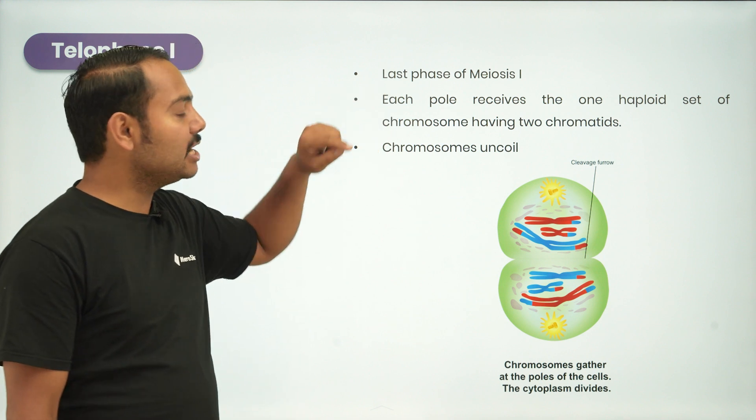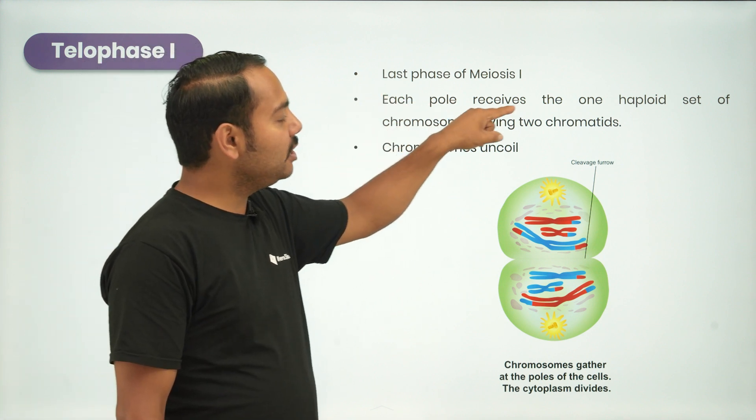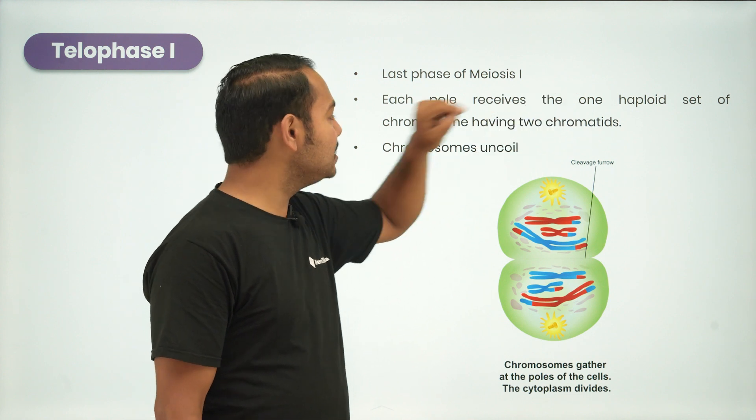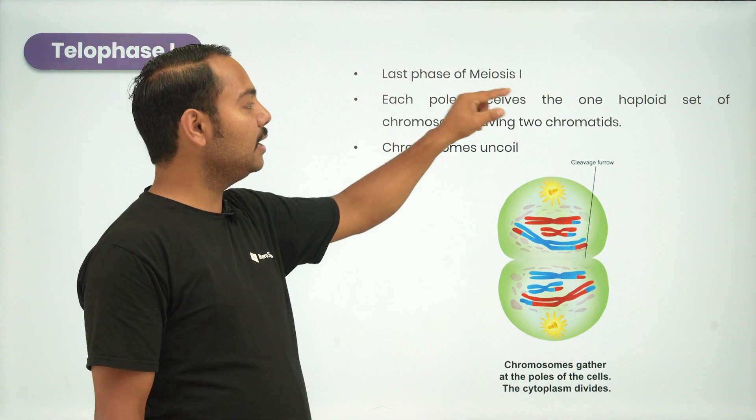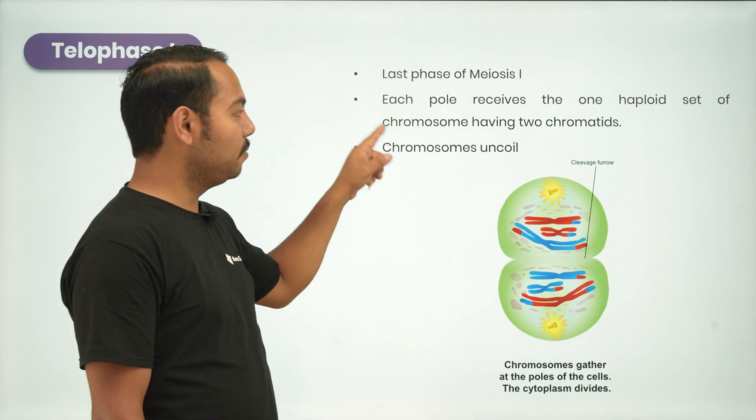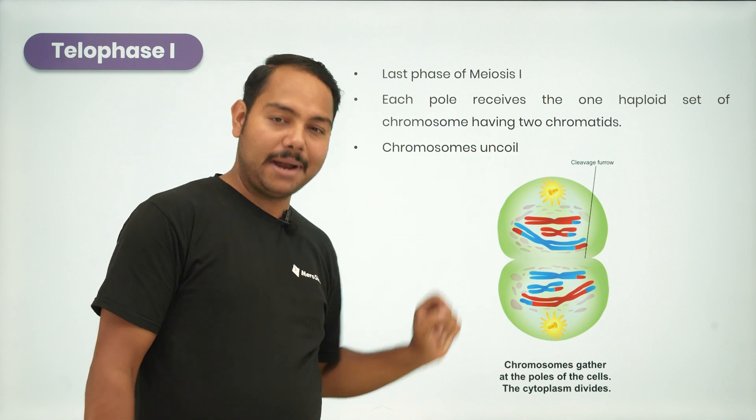It is the last phase of Meiosis I and each pole receives one haploid set of chromosomes. In this pole, it is the haploid set of chromosomes having two chromatids.